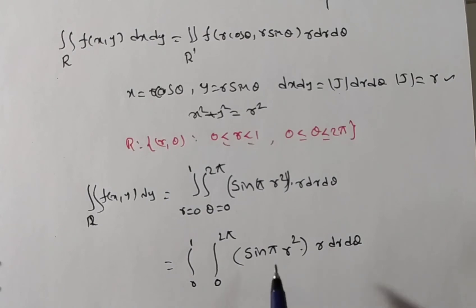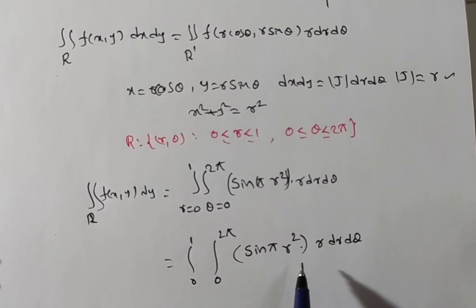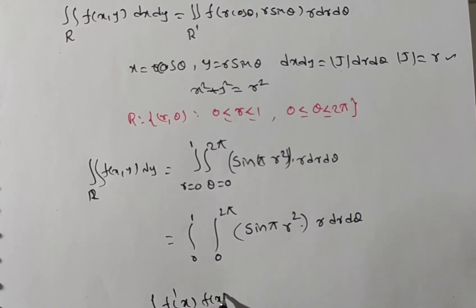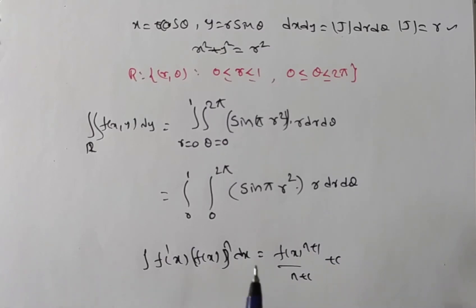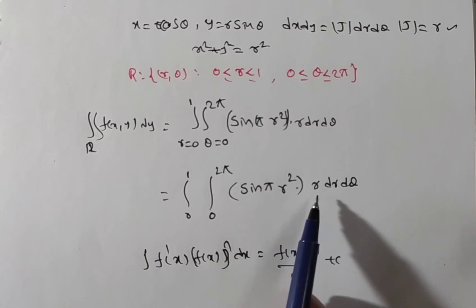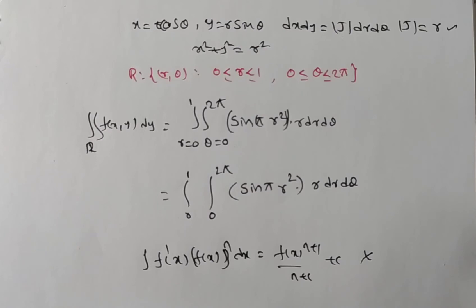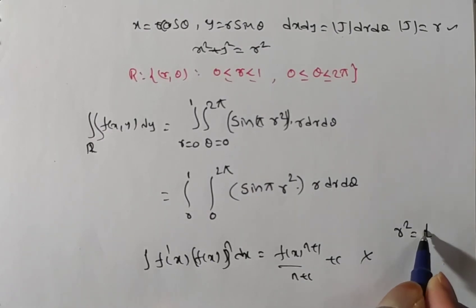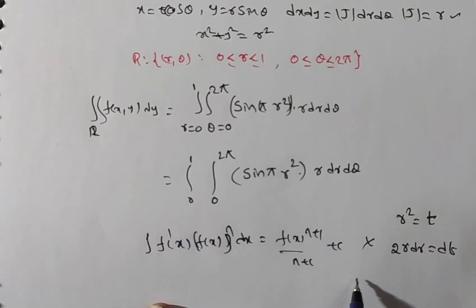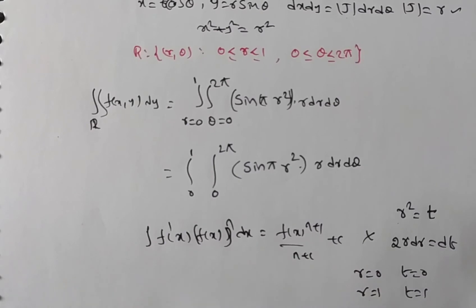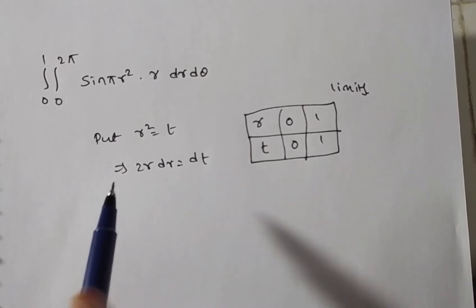We need to integrate sin(πr²) · r with respect to r. We cannot directly apply the power formula here, so we use the substitution method. Let t = r², then 2r dr = dt, so r dr = dt/2. Changing limits: when r = 0, t = 0; when r = 1, t = 1. The r limits 0 to 1 become t limits 0 to 1.